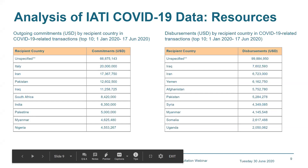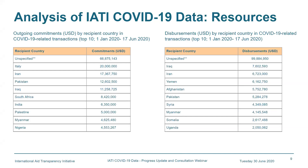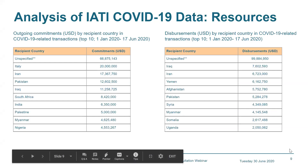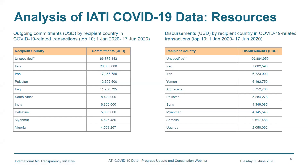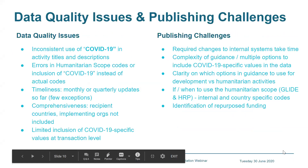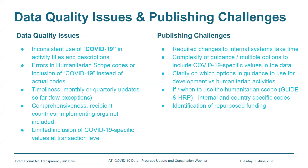Looking closer at the resource data in COVID-19-related transactions, we can see the recipient countries for both commitments and disbursements. This highlights the challenge of recipient countries not being included for quite a bit of the resources in both commitments and disbursements. There's more information and detail available in the news post, and I'll hand back to Patia to go through data quality issues and publishing challenges in more detail.